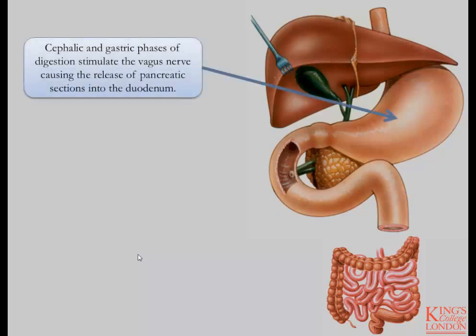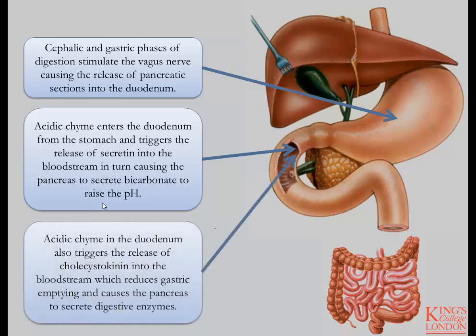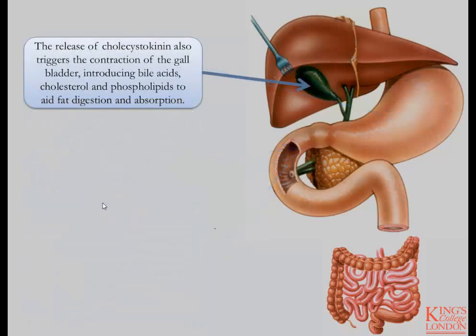The process of digesting fat actually begins prior to food being consumed. The cephalic phase, and then followed by the gastric phase once food has been consumed and enters the stomach, will directly stimulate the vagus nerve, causing the release of pancreatic secretions into the duodenum. Once the food in the stomach has been converted to an acidic chyme and it enters the duodenum, it triggers the release of secretin into the bloodstream, in turn causing the pancreas to secrete bicarbonate to raise the pH. The acidic chyme in the duodenum also triggers the release of cholecystokinin into the bloodstream, which reduces gastric emptying and causes the pancreas to secrete digestive enzymes. The release of cholecystokinin also triggers the contraction of the gallbladder, introducing bile acids, cholesterol, and phospholipids from endogenous sources into the small intestine to aid in fat digestion and absorption.